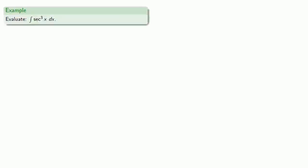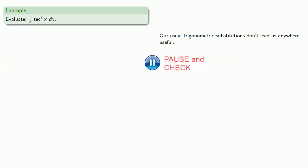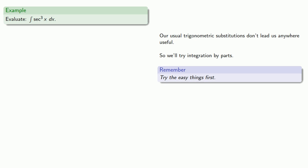For example, if we want to integrate secant cubed x dx, our usual trigonometric substitutions don't lead us anywhere useful, and so we'll try integration by parts. Why do we try integration by parts? Remember, when you're trying out something new, try the easy things first.